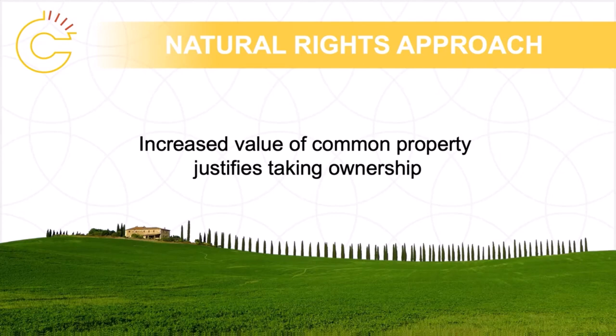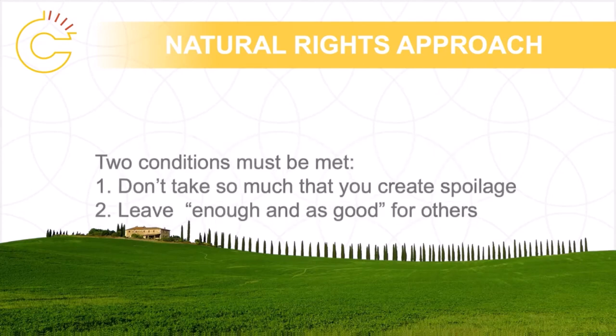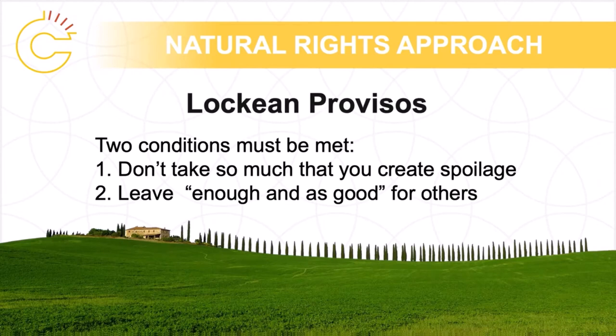Locke indicates that there are two important conditions that must be met to justify taking of common property. One should not take so much as to create spoilage, and one must leave enough and as good for others. Together, these are known as the Lockean provisos.